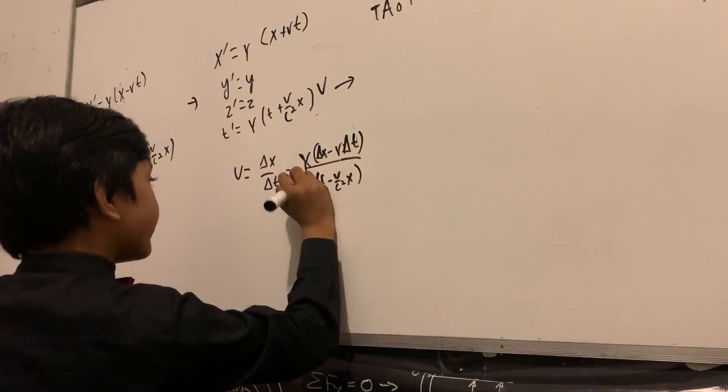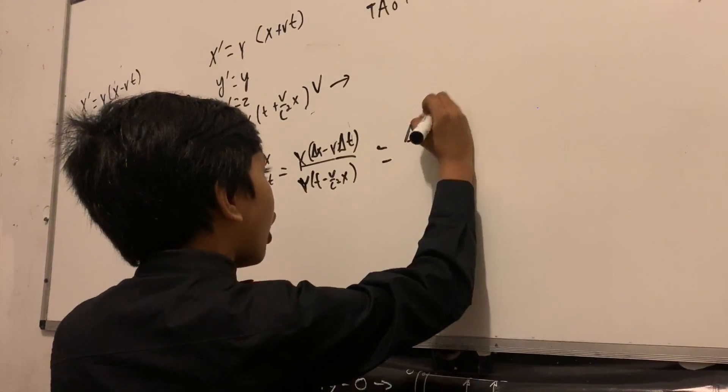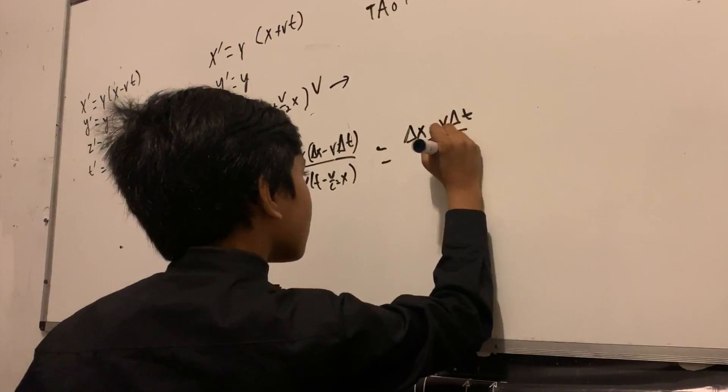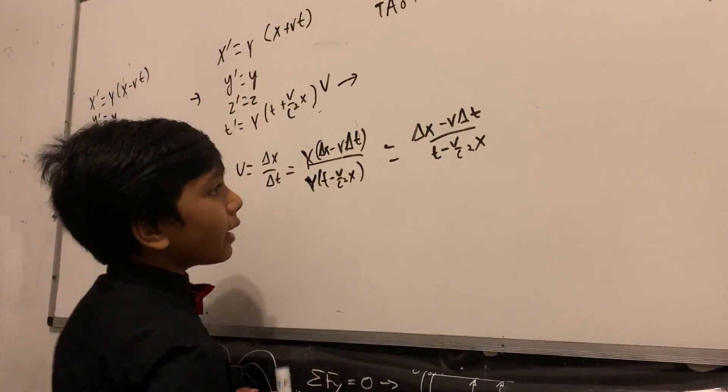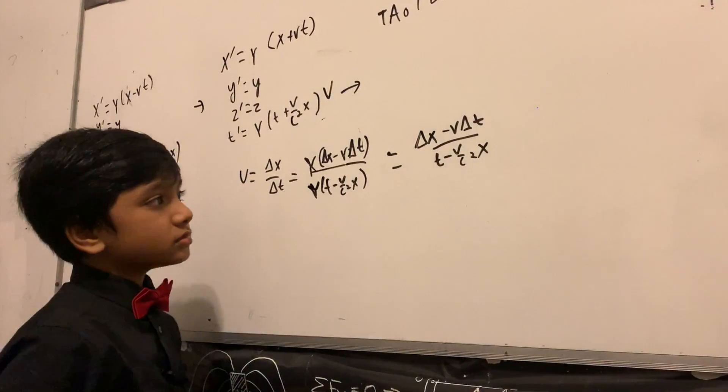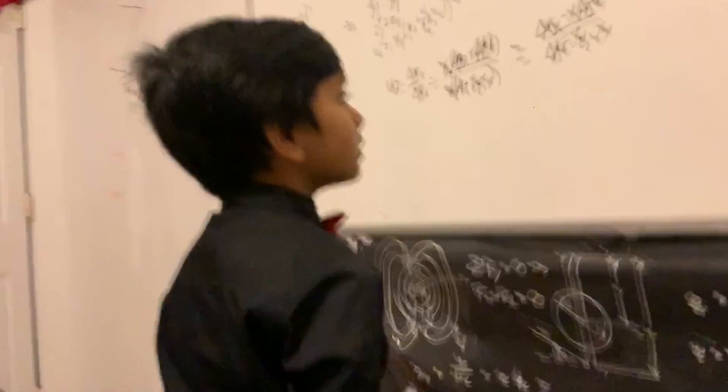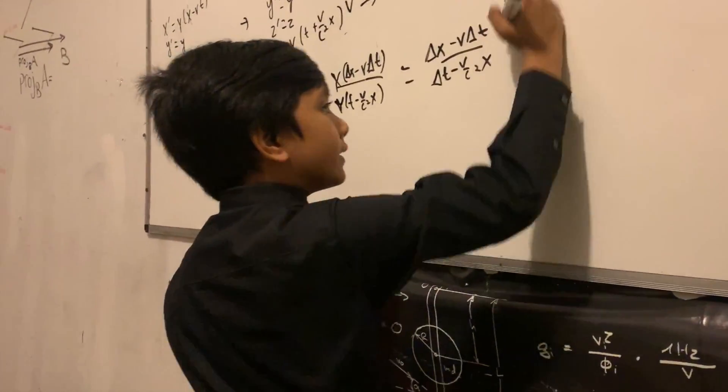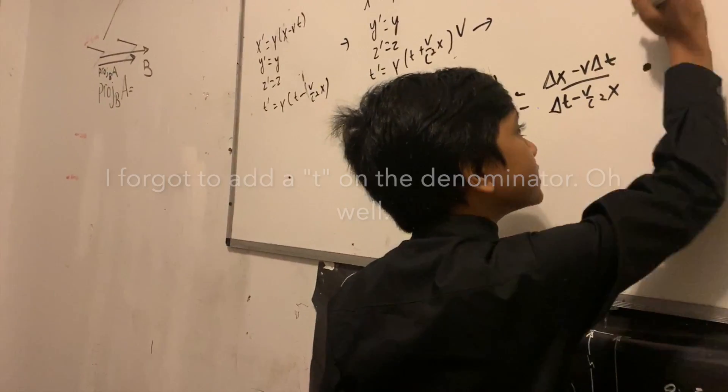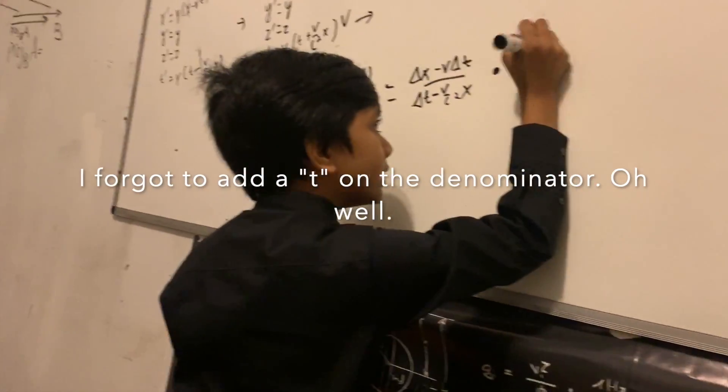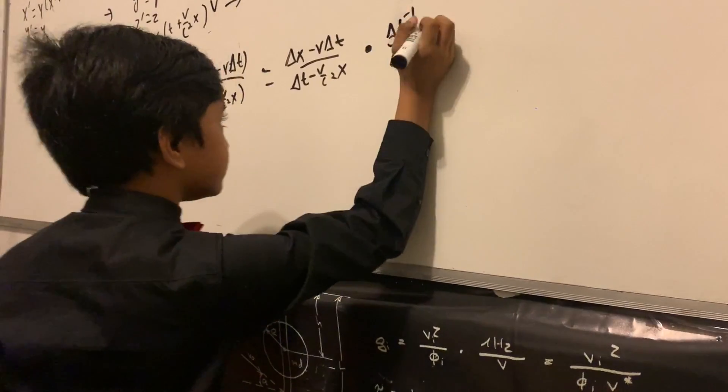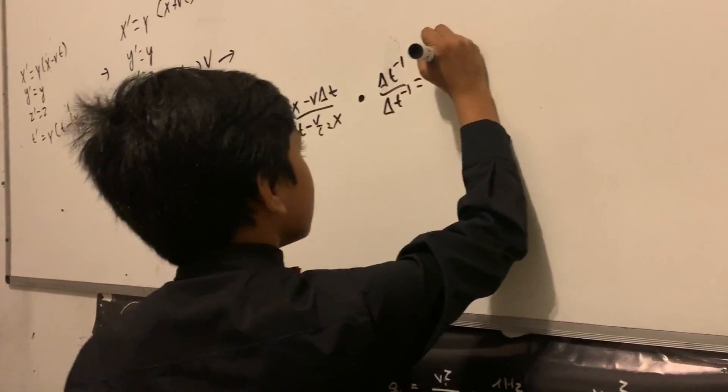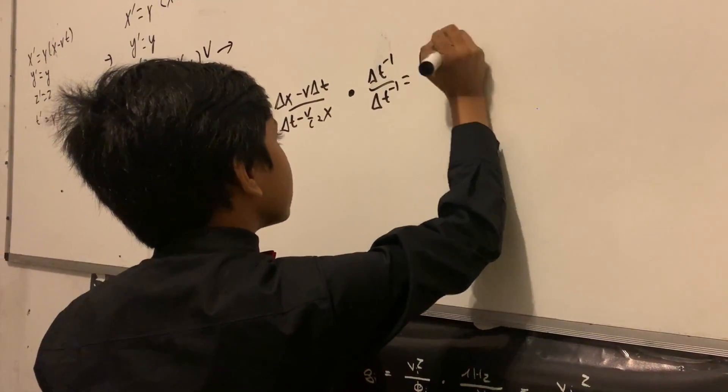So now when you cancel the gammas, it seems you have a hot burning mess. However, this can be easily solved by multiplying both sides by one over delta t.